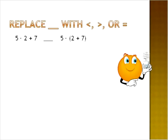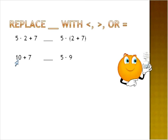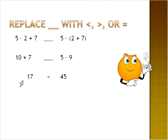We're going to do the same thing here. This time we have the same numbers — five, two, seven on each side — but we're showing that grouping symbols can change the value. On the left we first multiply five times two, giving ten. On the right our first step is to add two plus seven, giving nine. Then five times nine is forty-five, and ten plus seven is seventeen. We place the correct symbol showing forty-five is greater than seventeen, or we would read it as seventeen is less than forty-five.